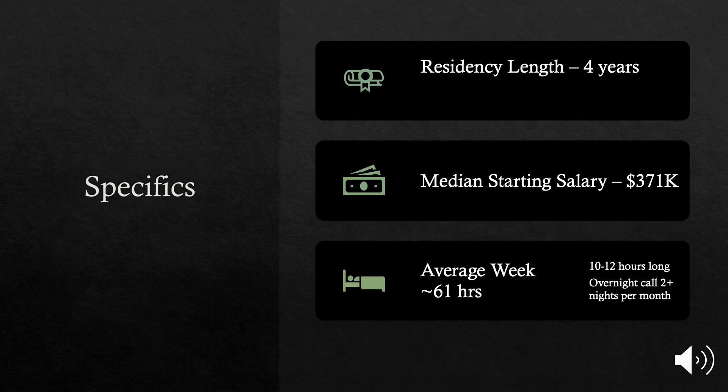Anesthesia residency is four years long. The anesthesia part itself is three years and then you do an intern year before that. A lot of programs are now going to the four years combined, but we'll talk about that later. The median starting salary for an anesthesiologist is $371,000, based on AAMC data. Anesthesiologists work pretty long days, usually 10 to 12 hours, arriving early in the morning and staying until the OR room is finished — averaging about 61 hours a week.